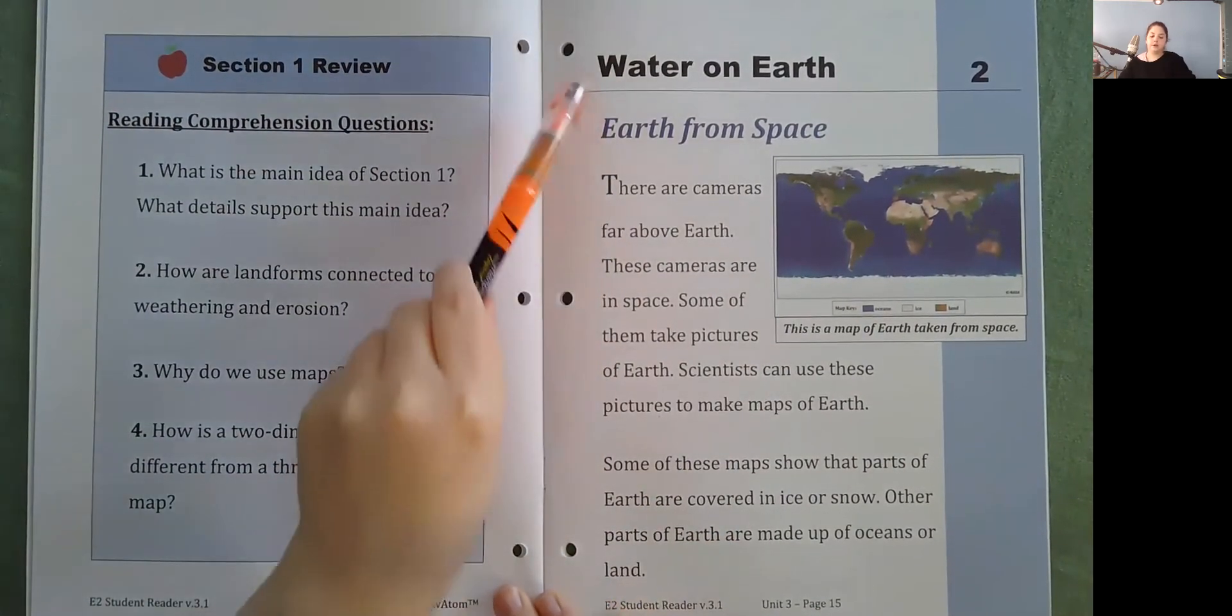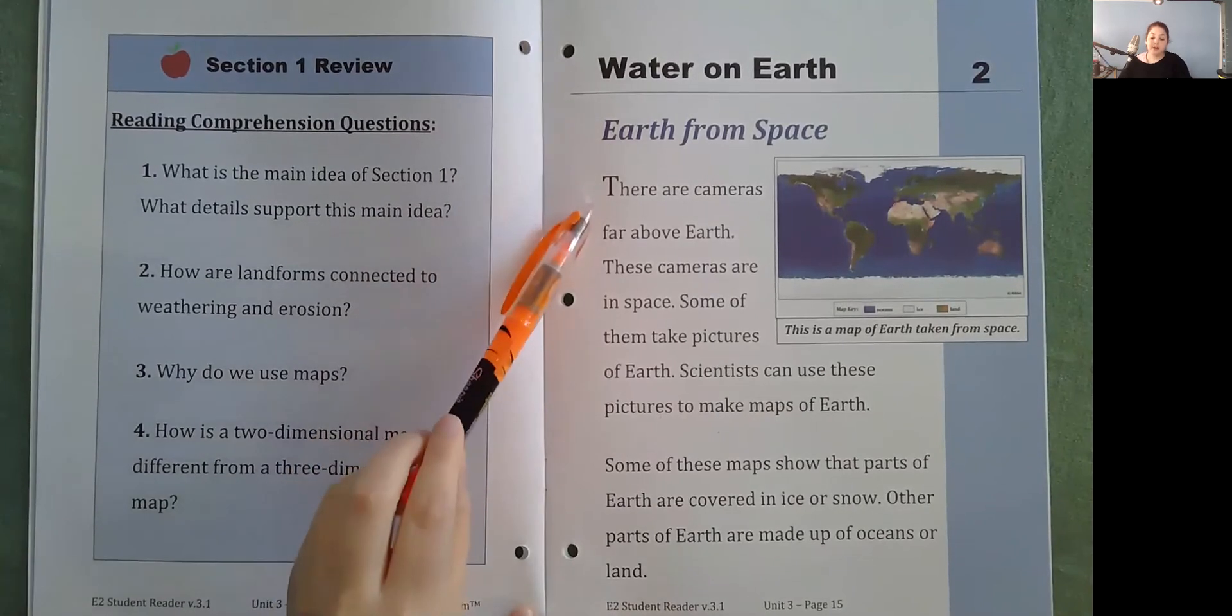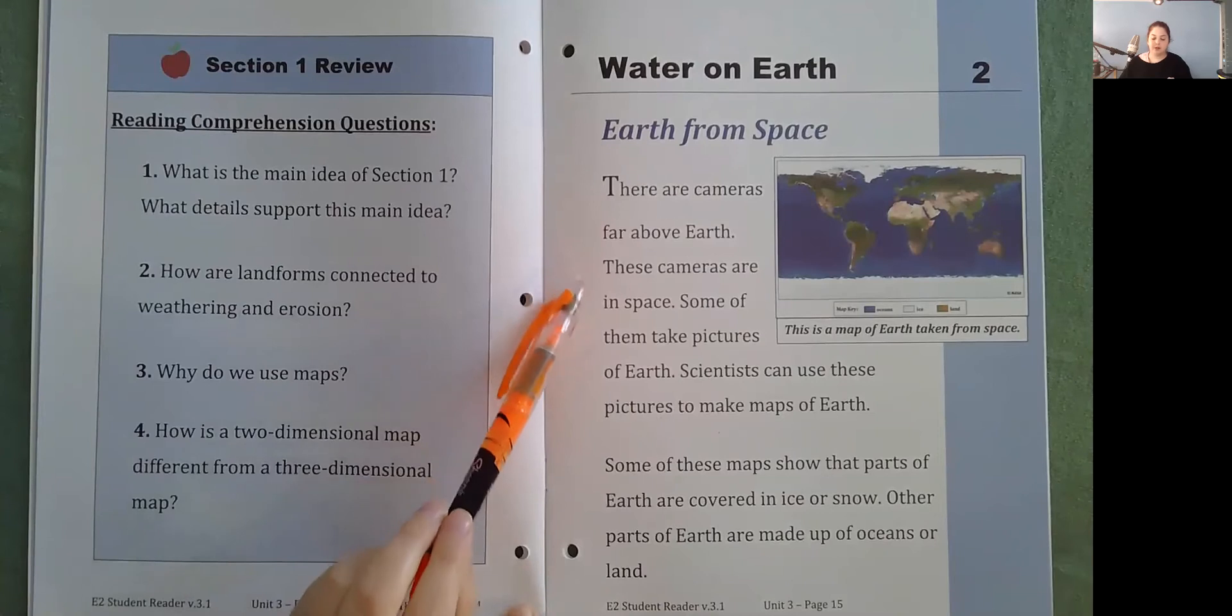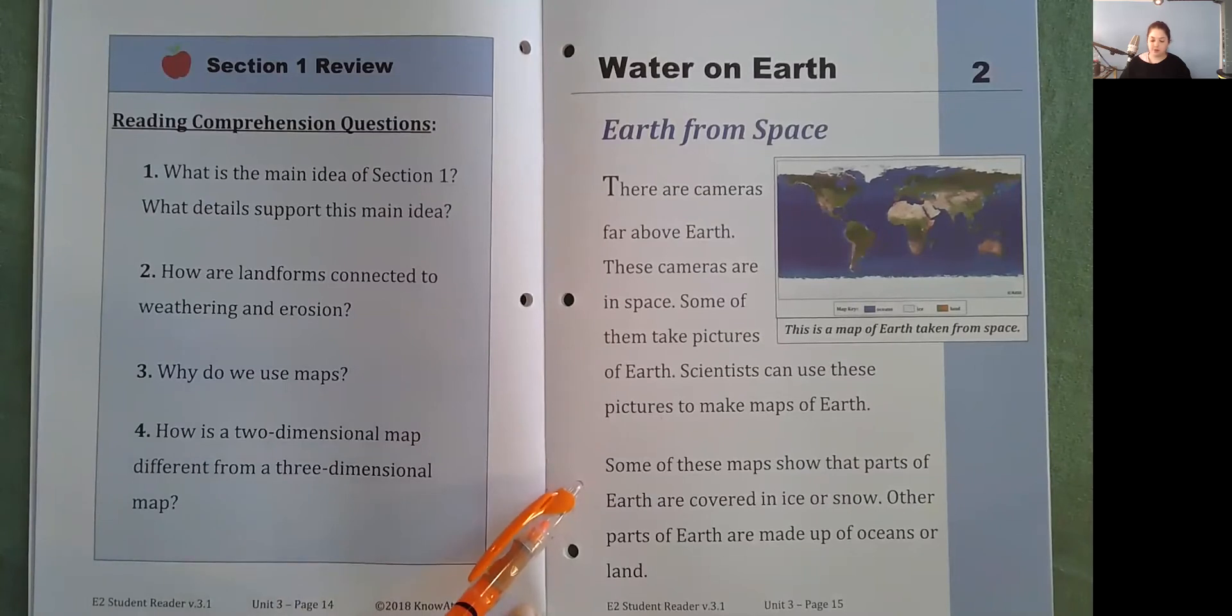Water on Earth. Earth from space. There are cameras far above Earth. These cameras are in space. Some of them take pictures of Earth. Scientists can use these pictures to make maps of Earth. Some of these maps show that parts of Earth are covered in ice or snow. Other parts of Earth are made up of oceans or land.